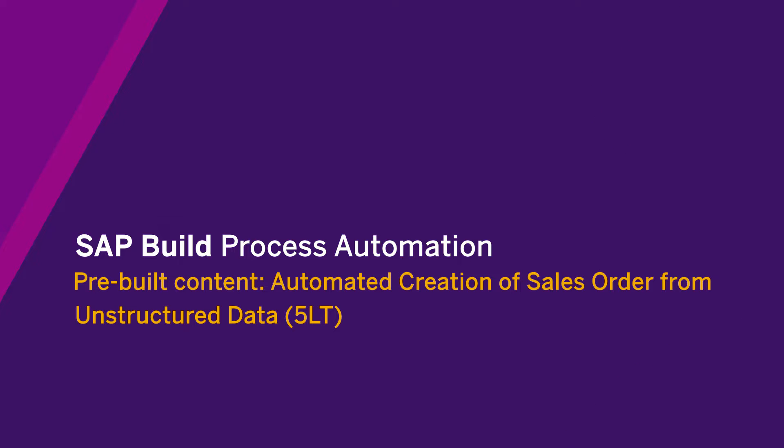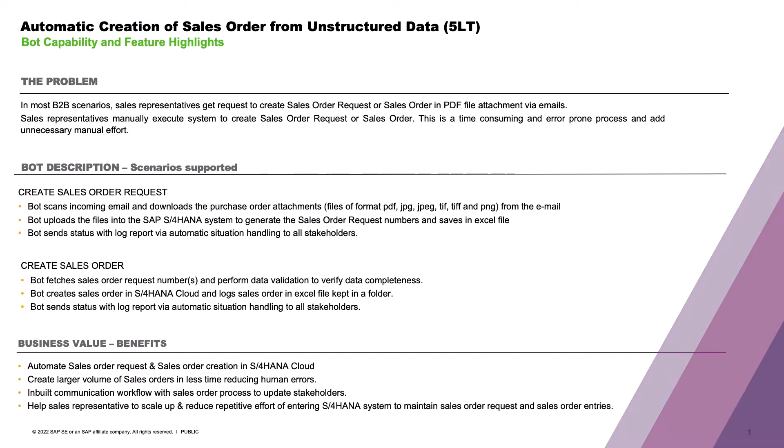Sales order processing is integral to the order-to-cash process. To help improve this process, Process Automation provides a pre-built automation template called Automatic Creation of Sales Order from Unstructured Data, or the 5LTBOT for short. Oftentimes, sales order processing occurs through an internal sales representative who receives emails from buyers containing purchase orders in the form of unstructured files such as PDFs.